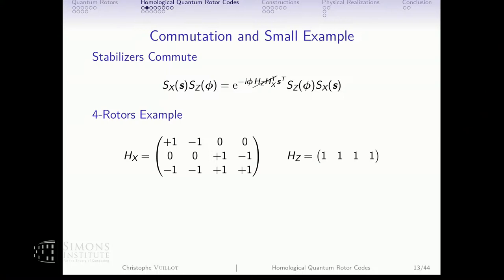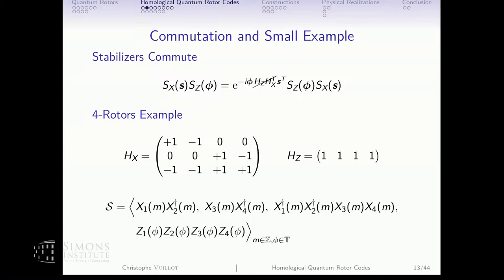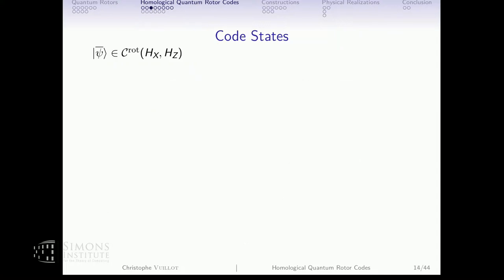Let's do an example to be more concrete. Let me pick these two matrices with four rotors. I have three X stabilizers and a common one for the Z's. In terms of Pauli operators: if I shift by m the first rotor and by minus m the second, then this should stabilize my state—and similarly for the other generators.